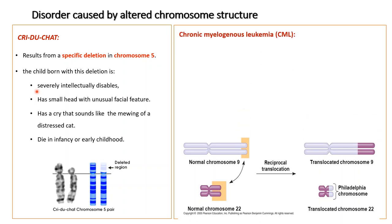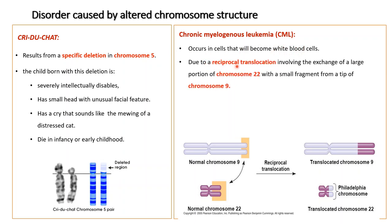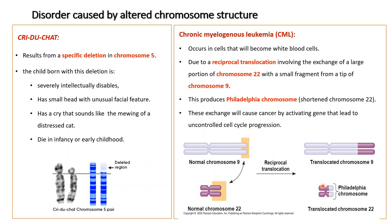Chronic myelogenous leukemia (CML) is another disease caused by altered chromosome structure. CML occurs in cells that will become white blood cells, due to a reciprocal translocation involving the exchange of a large portion of chromosome 22 with a small fragment from the tip of chromosome 9, producing the Philadelphia chromosome — a shortened chromosome 22. This exchange activates genes that lead to uncontrolled cell cycle progression, causing cancer.